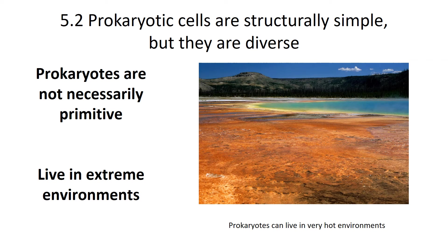At the other end of extreme, prokaryotes can live in very hot environments. In the 1970s, they thought you wouldn't find life living in much more than 130–140 degree water. They were wrong. They found Thermus aquaticus living in Yellowstone at over 160 degrees. And at hot vents at the bottom of the ocean, they found bacteria and archaea — two types of prokaryotes — living in water that's over 200 degrees Fahrenheit, 100 degrees Celsius. That's almost hot enough to boil water.